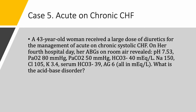Case number five — acute on chronic congestive heart failure. A 43-year-old woman received a large dose of diuretics for management of acute on chronic systolic CHF with low ejection fraction. On the fourth hospital day, arterial blood gases were done on room air. pH is 7.53 — alkalemia. PaO2 is 80, PaCO2 is 50, bicarbonate is 40. Sodium is elevated at 150, chloride 105, potassium low at 3.4, serum bicarbonate 39, anion gap 6. You have alkalemia and elevated bicarbonate — metabolic alkalosis. We calculate the expected PaCO2 as 40 plus 0.6 times (40 minus 24), giving us 49.6. The actual PaCO2 is 50, so they are similar. This is a straightforward simple acid-base disorder — compensated metabolic alkalosis.